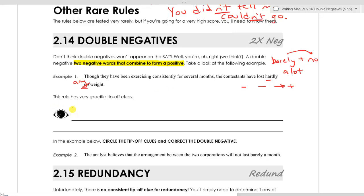So this tip-off clue here, it's very specific. Double Negatives has a very specific tip-off clue. So it is going to be hardly, the word we just saw on example one, barely, another word that means hardly, and scarcely, yet another word, combined with another negative, such as, and I'll give you a couple of examples here, a few examples, such as not, no, or without.